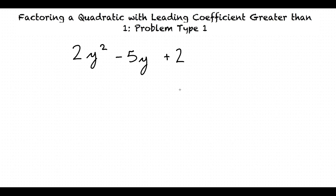The first thing we want to do when factoring such a quadratic is to look at each term and see if there is any greatest common factor that we can first divide out to make our problem simpler. We see a 2y squared, a negative 5y, and a positive 2. There is no greatest common factor here.